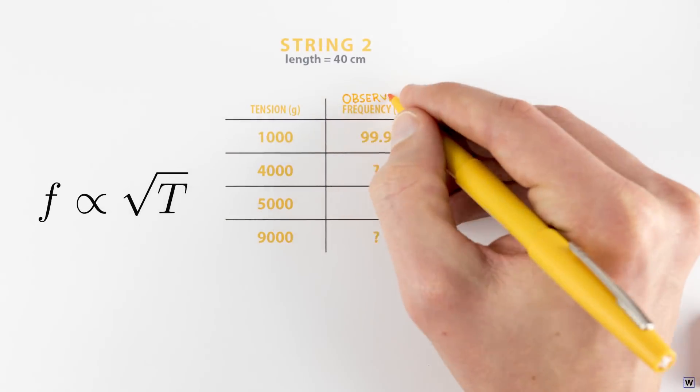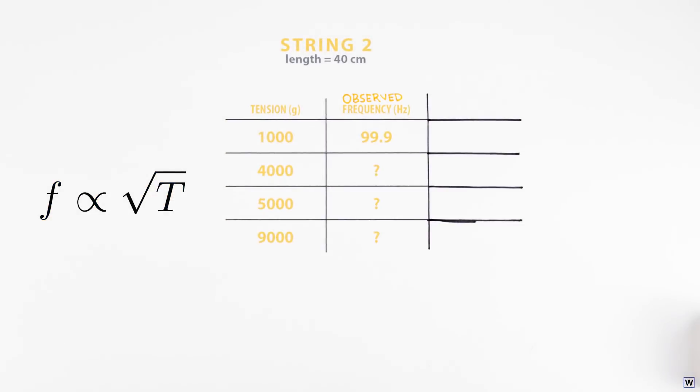We can use our guess to make specific predictions about our untested string setup. Our 40 centimeter long string, under a tension of 1,000 grams, vibrates at a frequency of 99.9 hertz. Using our educated guess that the frequency of a vibrating string is proportional to the square root of its tension, we can predict that if we quadruple the string tension to 4,000 grams, our frequency should increase by a factor of the square root of 4, so a factor of 2, making our predicted frequency 199.8 hertz.